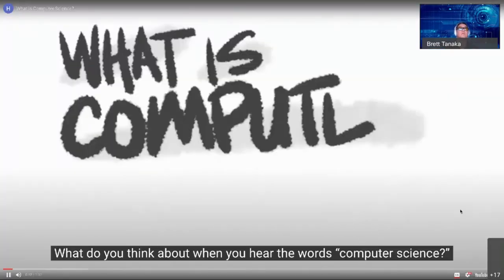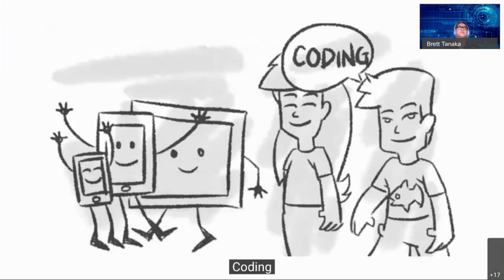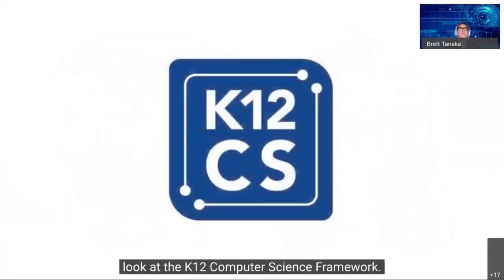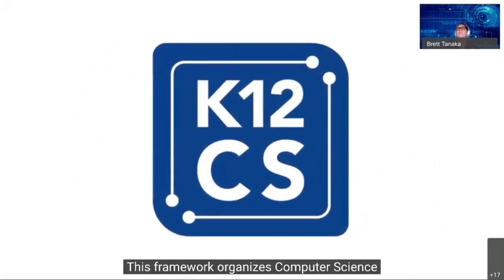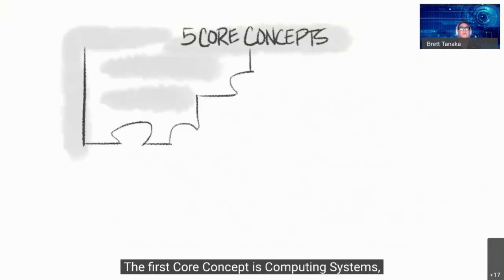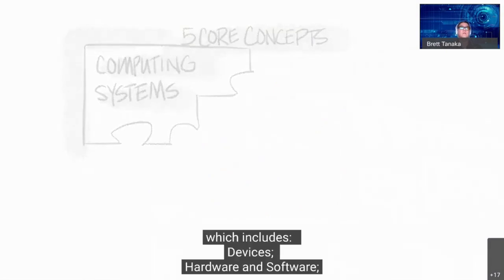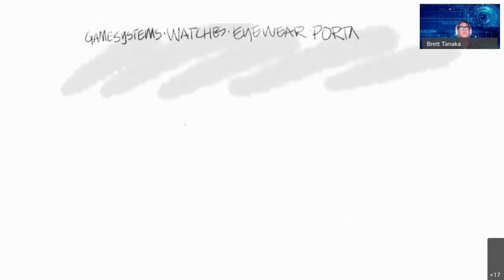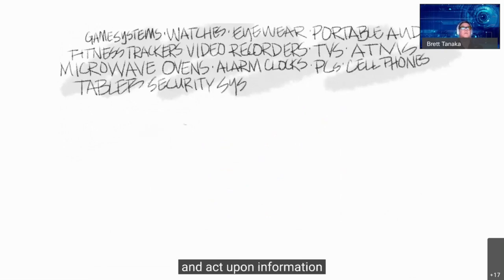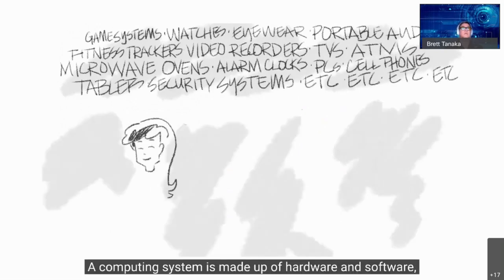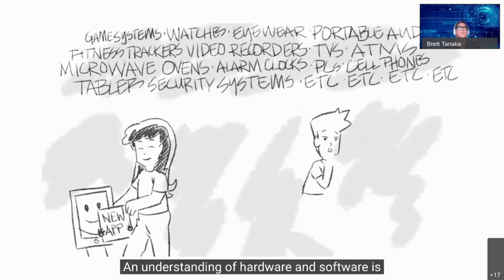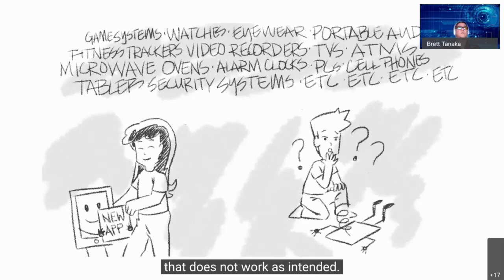What do you think about when you hear the words 'computer science'? Computers? Coding? Programming? It's this and much more. The K-12 computer science framework organizes computer science into five core concepts. The first core concept is computing systems, which includes devices, hardware and software, and troubleshooting. People interact with a wide variety of computing devices that collect, store, analyze, and act upon information. A computing system is made up of hardware and software and communicates and processes information in digital form.